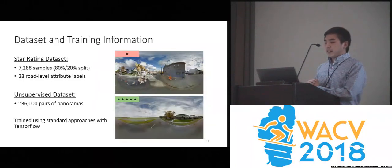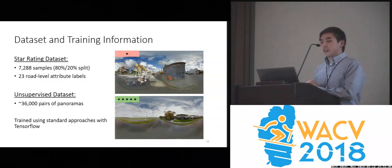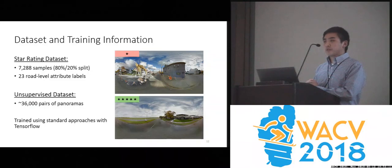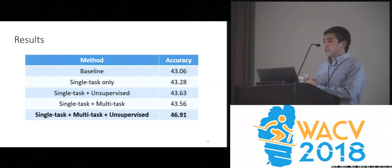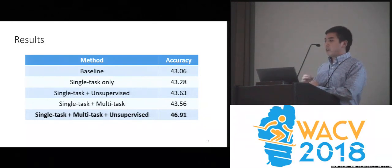We have 7,288 samples in our star rating dataset, 80% used for training and 20% reserved for testing, and 23 different road-level attribute labels to predict from. We have approximately 36,000 pairs of panoramas for unsupervised training, and we train using standard approaches with TensorFlow. Our results show that our method achieves the best top-one accuracy across the dataset when combining all methods; in the baseline, the attention is fixed to be uniform.